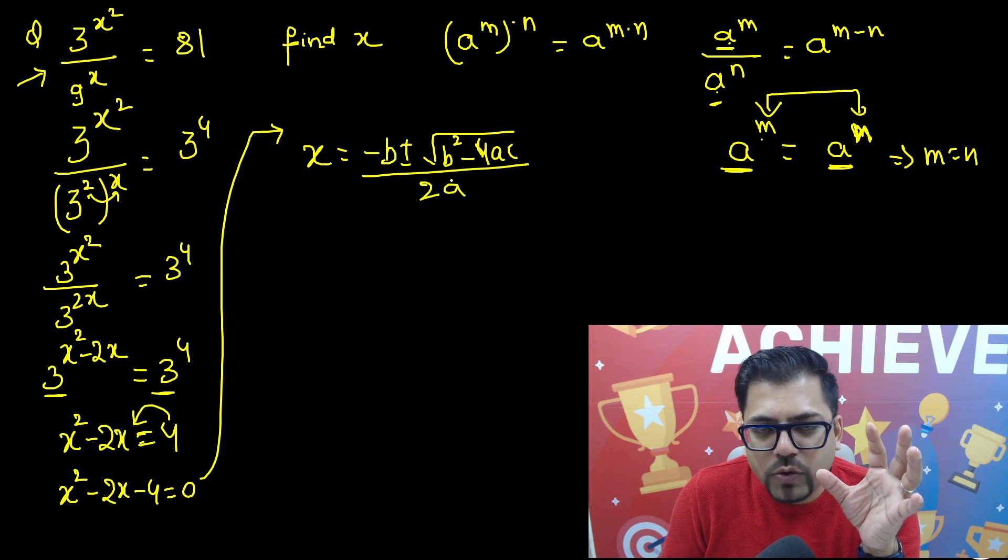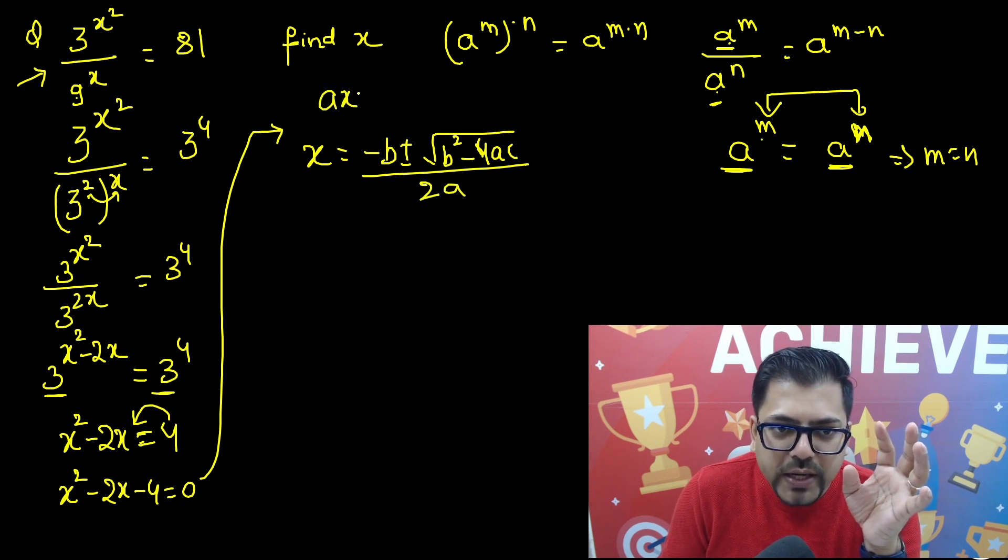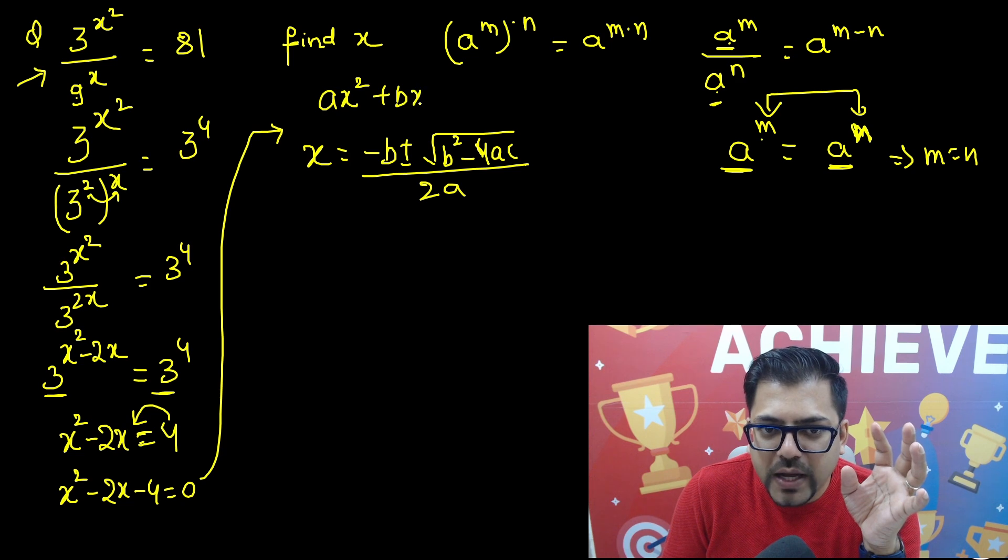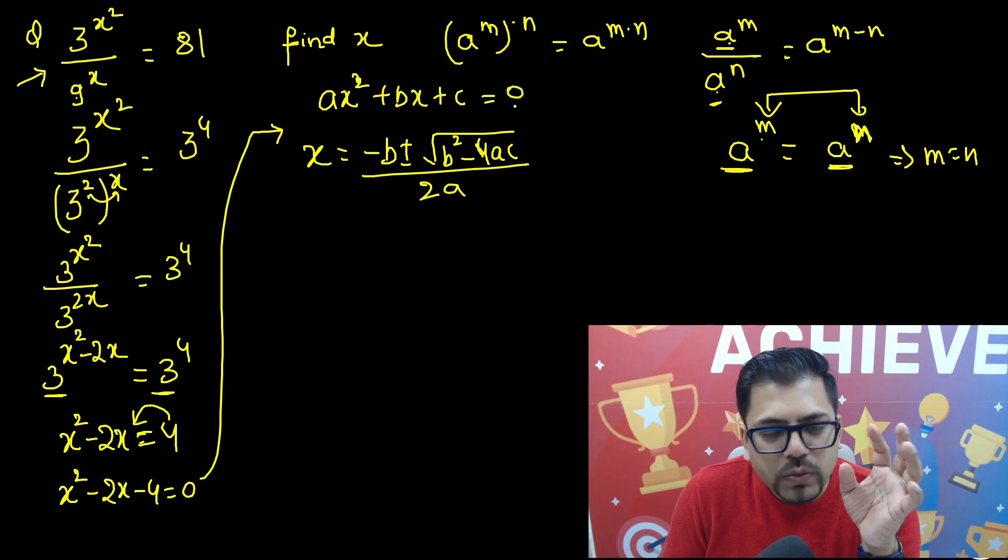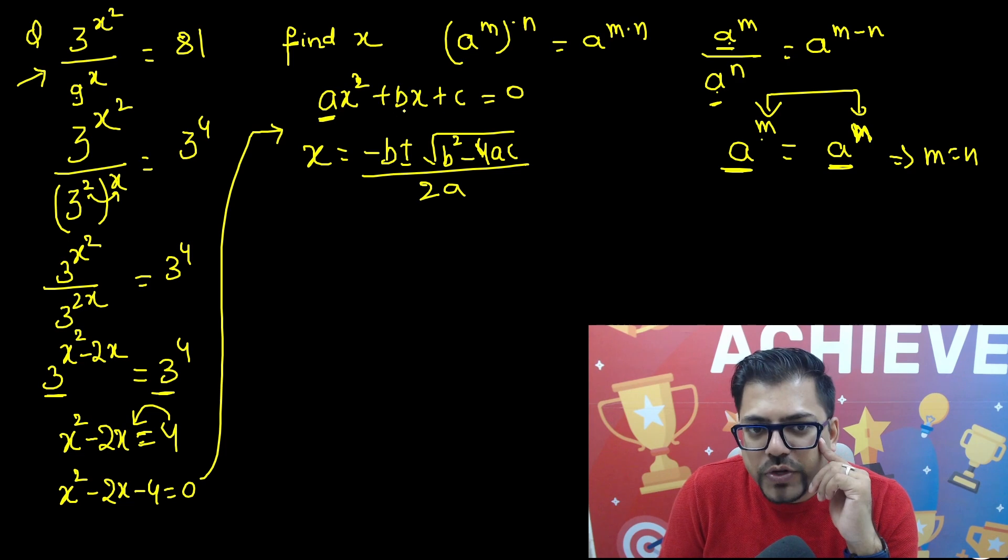Now what is b, what is a, what is c? So if you have a quadratic equation of this format, ax squared plus bx plus c equals to 0, then a is the coefficient of x squared, b is the coefficient of x, and c is the constant.